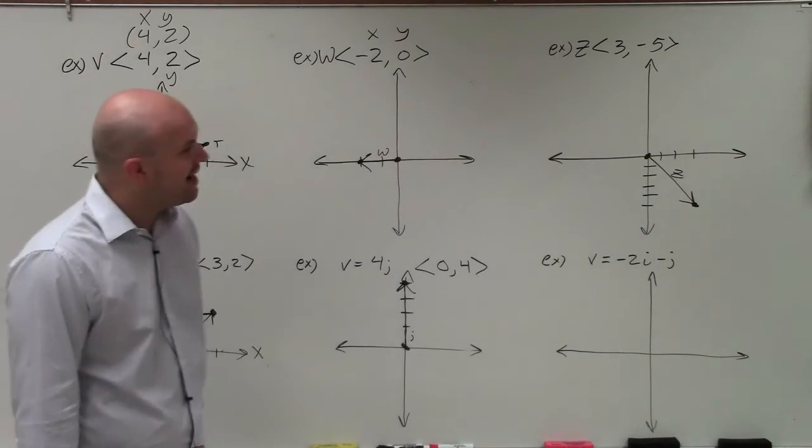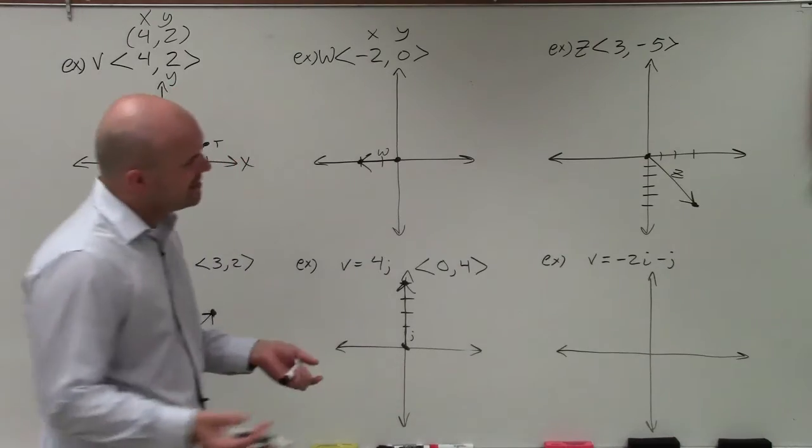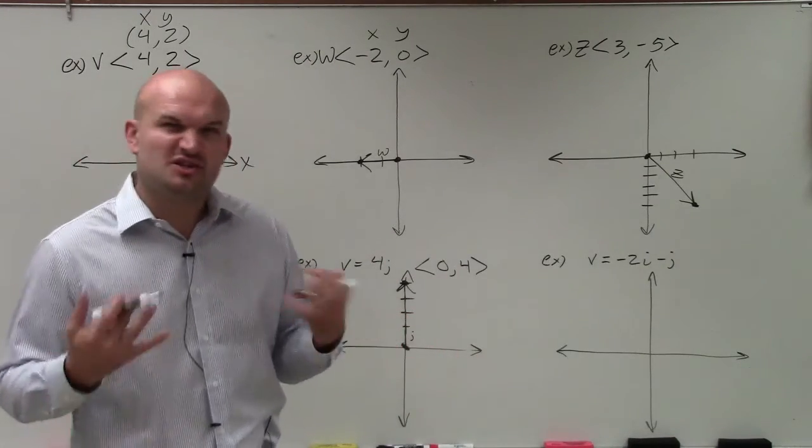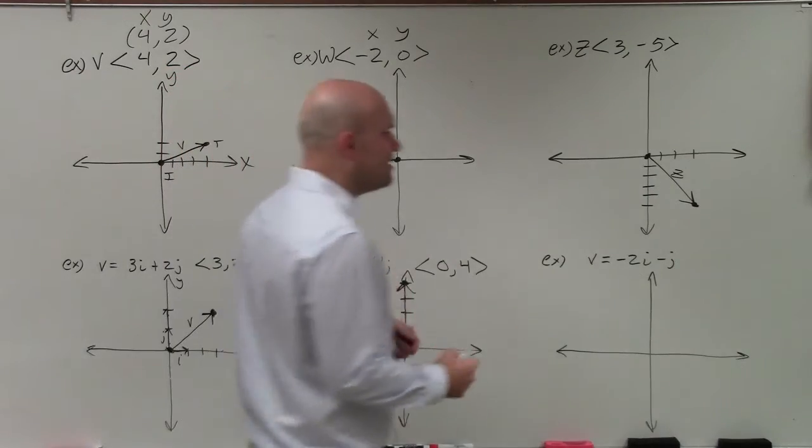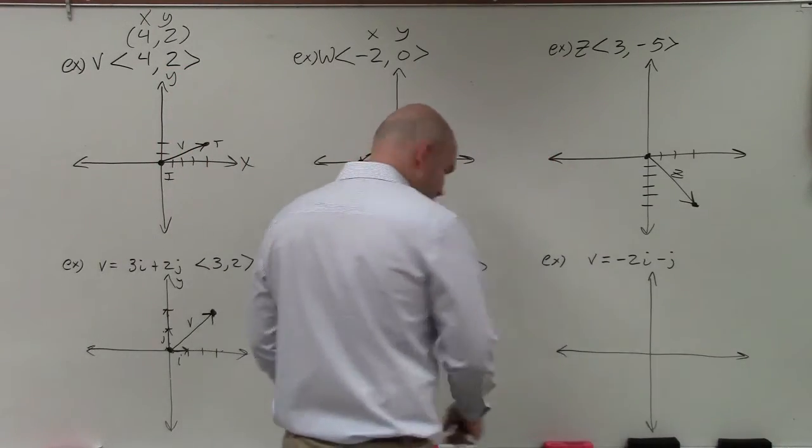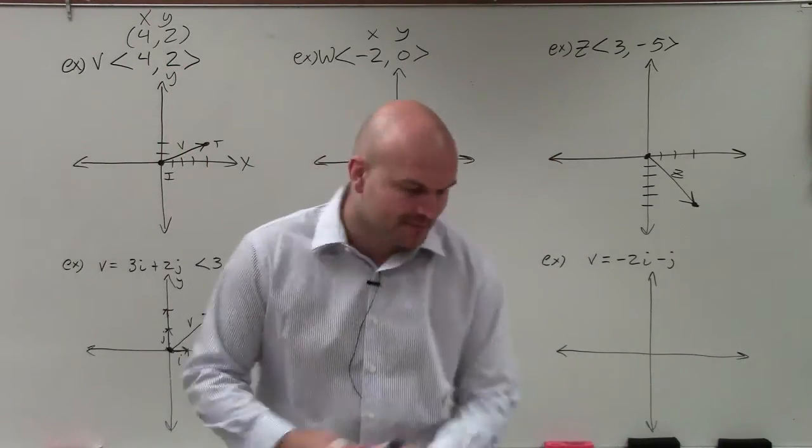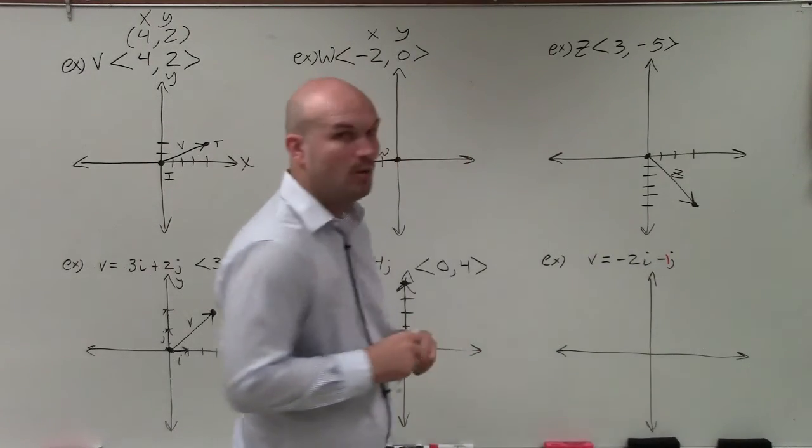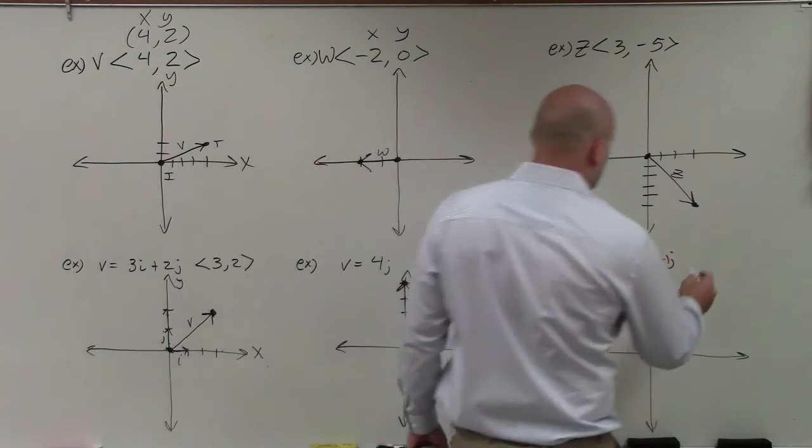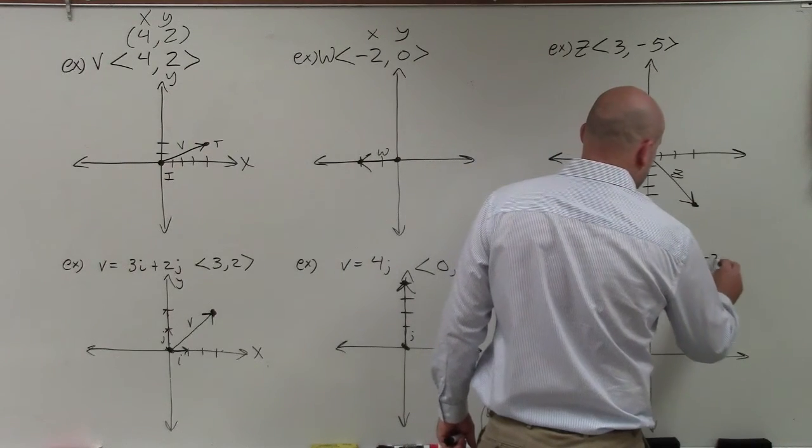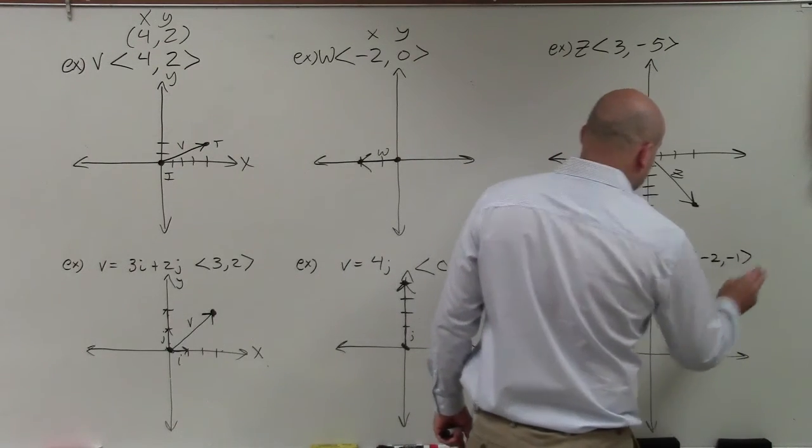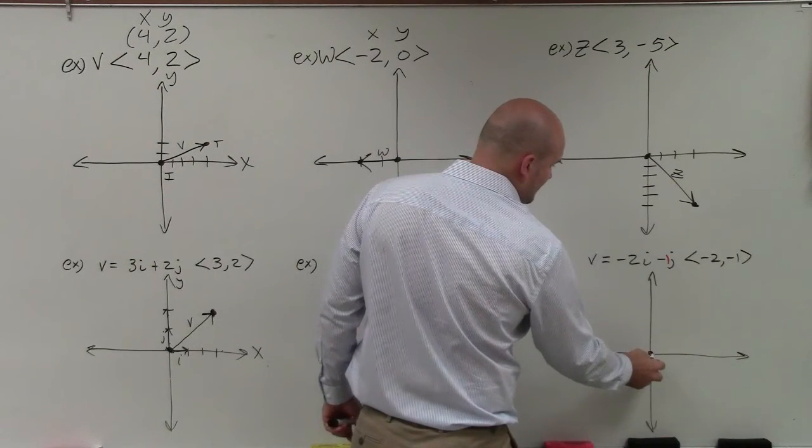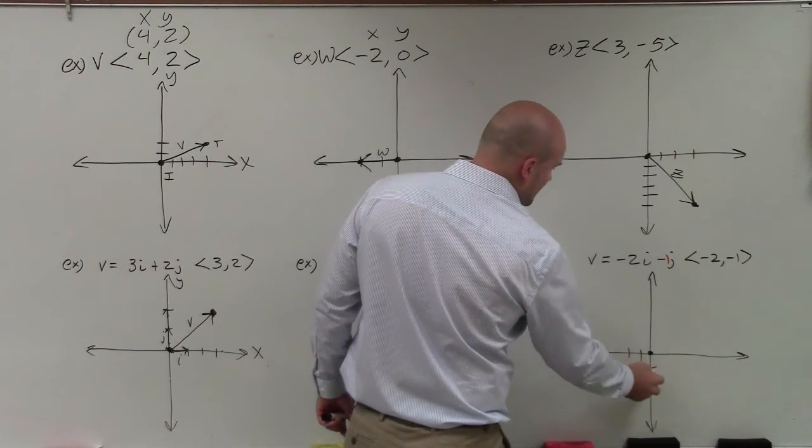Lastly, I have -2i minus j. This one sometimes gets students because they don't see a value in front of the j, so they forget what that is. But just remember, if we don't have a number explicitly written right in front, then we know that that number can always equal to 1. So therefore, we'll write this out in component form as (-2,-1). So therefore, from (0,0), I can go left to down 1.